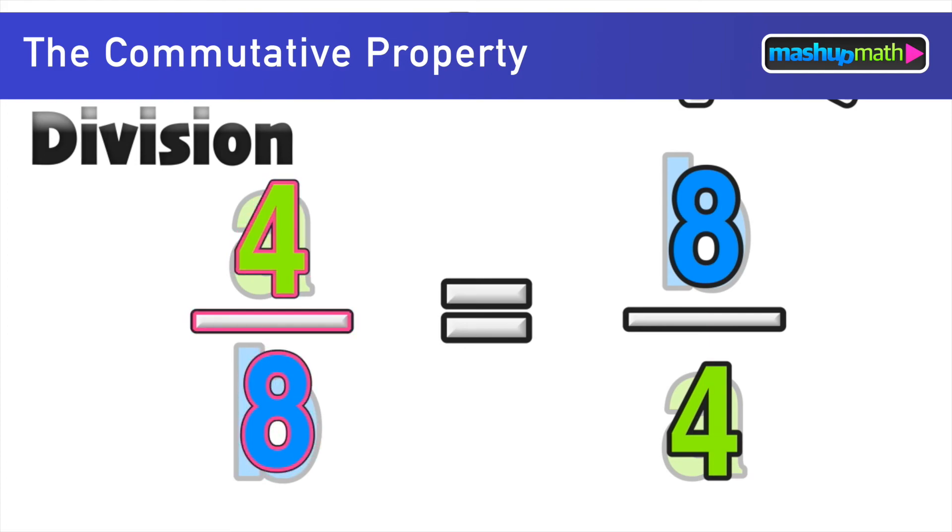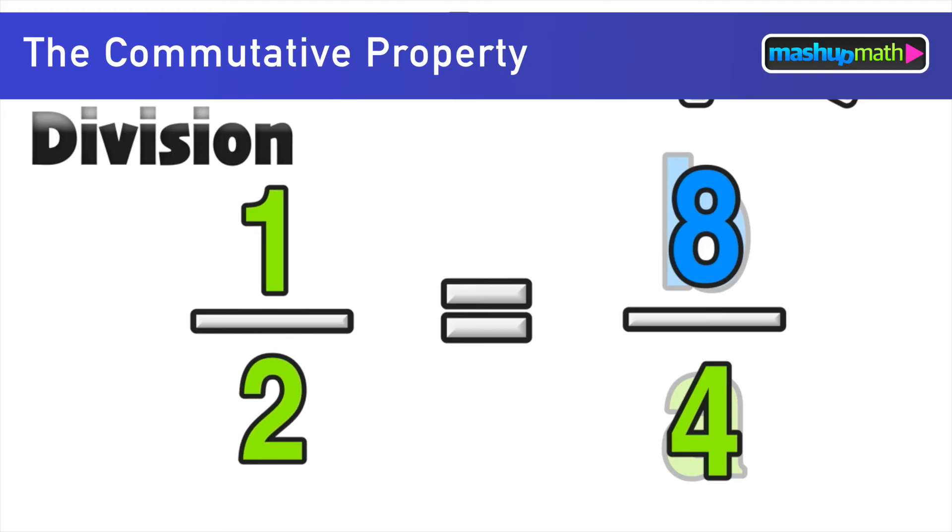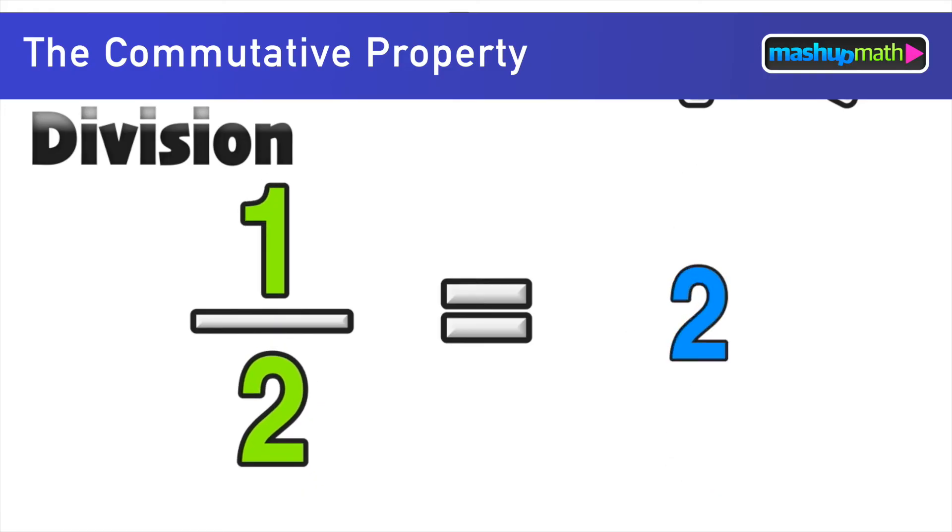On the left side we would have four over eight or four divided by eight which we know equals one half. And on the right side of the equal sign eight over four, eight divided by four, is equal to two. And we have a problem here because one over two does not equal two. So this example shows why the commutative property does not hold for division.